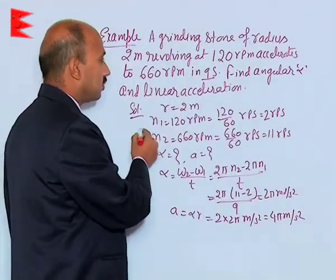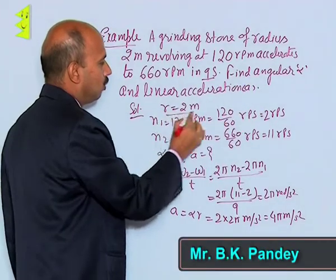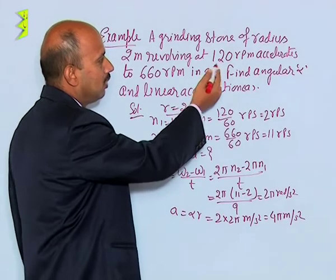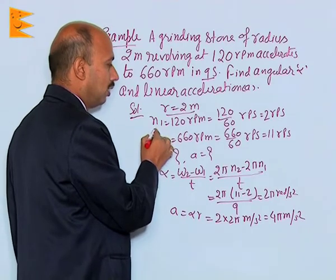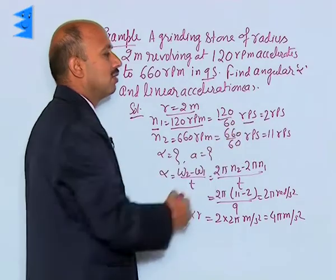See here, linear acceleration we can give symbol a. So you are given r is equal to 2 meter and number of revolution per minute is 120, so we can get angular frequency n1. n1 is equal to 120 revolution per minute, that is 120 revolution per second.